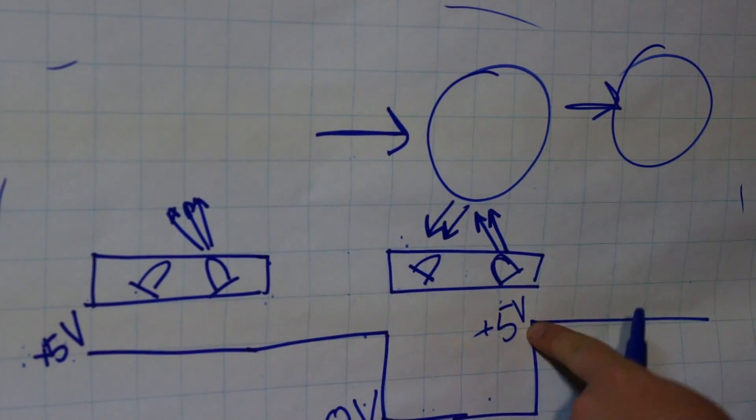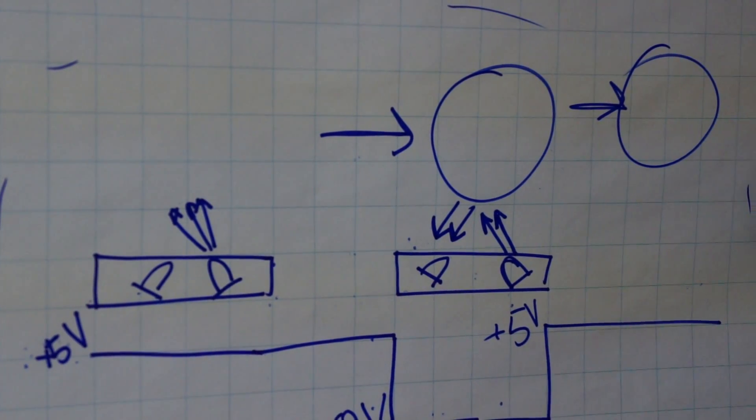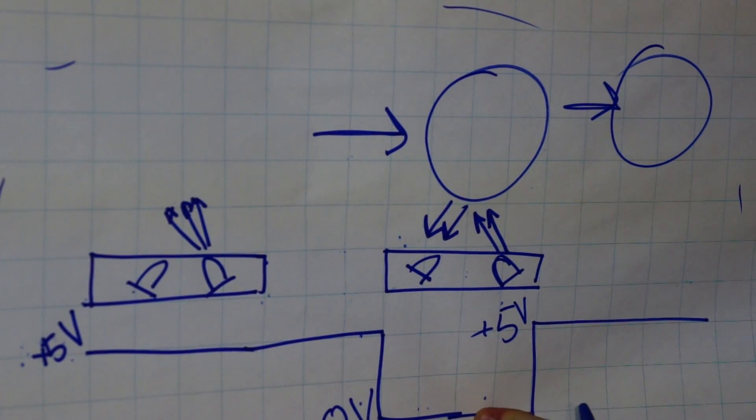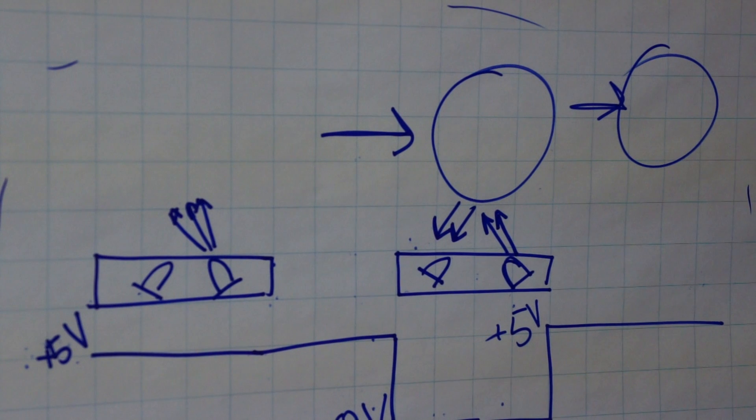This waveform will be very easy for a microcontroller to pick up. The 5 volts will basically be a 1, and 0 will be a 0 in terms of digital logic.